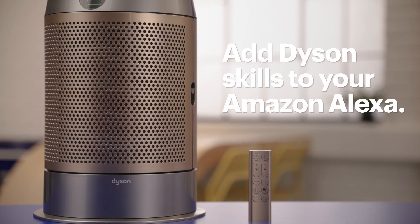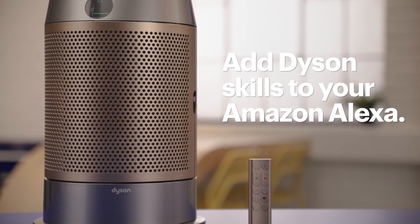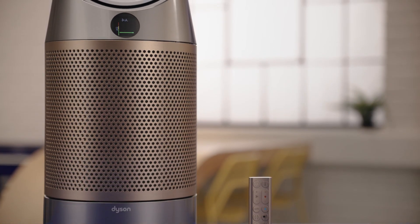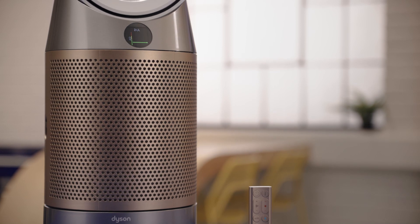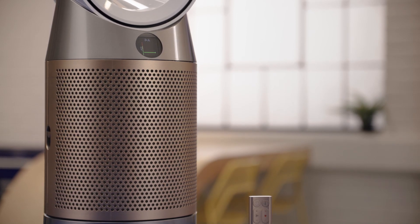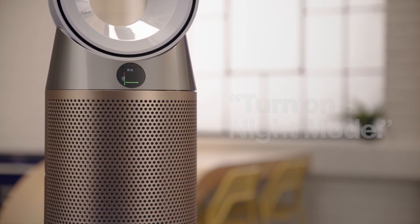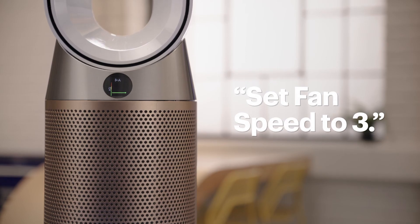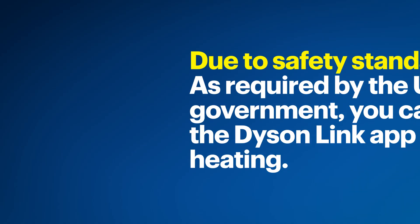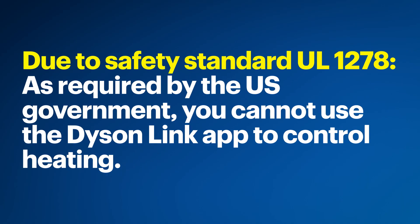You can also add Dyson skills to your Amazon Alexa account, so you can control the Dyson HP09 purifier just by saying things like "turn on night mode" or "set fan speed to 3." One quick call out: due to required government safety standards, you cannot use the Dyson Link app to control heating — you have to do that on the unit itself, or using the remote.